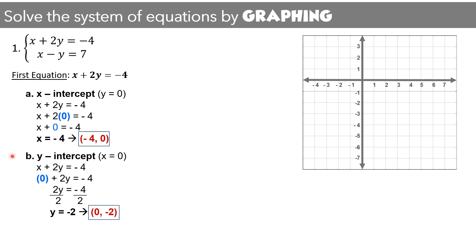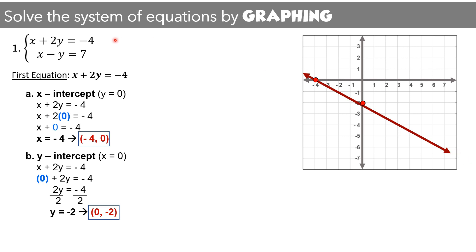We are done with the first equation, so we may now graph it. For the x-intercept, we locate negative 4 on the x-axis and plot the point. For the y-intercept, we locate negative 2 on the y-axis and plot that point. We then connect these two points to form the line of the first equation.